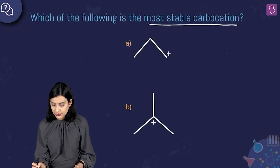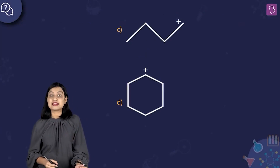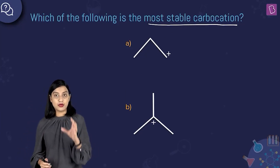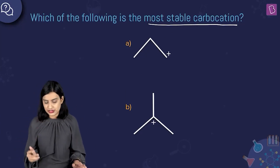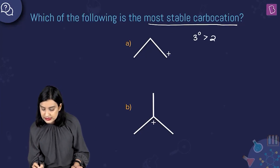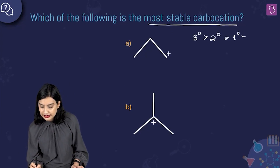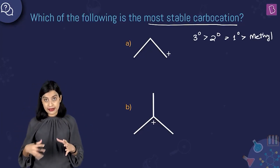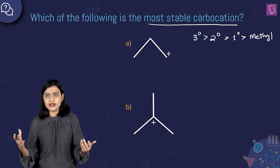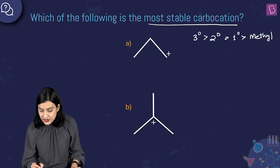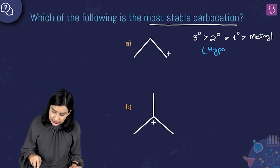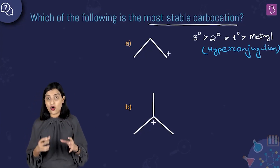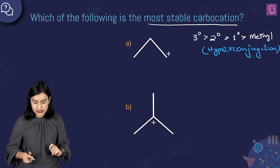Here they're asking us for the most stable carbocation from options A, B, C, and D. Whenever it comes to carbocation stability — something you'll use a lot in coming chapters — the order of stability is: tertiary > secondary > primary > methyl carbocation. The stability is majorly governed by hyperconjugation, which is the major factor determining the stability of carbocations, free radicals, and alkenes.